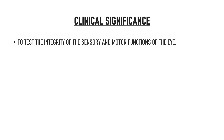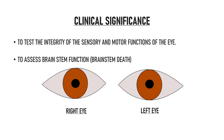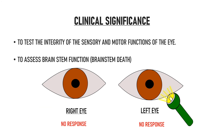The clinical significance of pupillary light reflex is that it is a useful diagnostic tool for testing the integrity of the sensory and motor functions of the eye — the integrity of the retina, optic nerve, and oculomotor nerve. Emergency physicians often perform pupillary light reflex tests to assess brainstem function, including cases of brainstem death where both the direct and the consensual light reflexes are absent in both eyes.